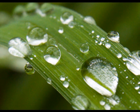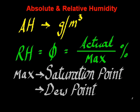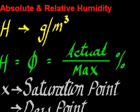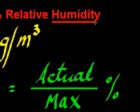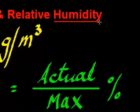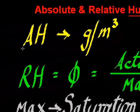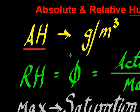Hi there guys. Today's talk is about the relationship between absolute humidity and relative humidity. Humidity is a measure of how much water there is in the atmosphere. Absolute humidity is the weight of water in the atmosphere compared with the volume, and it's usually measured in grams per cubic meter.